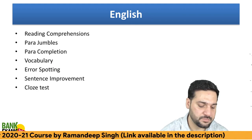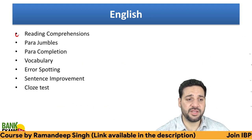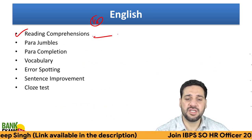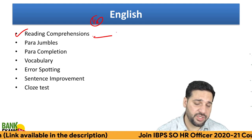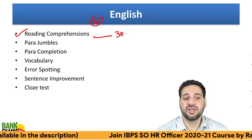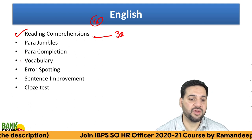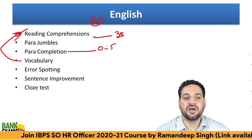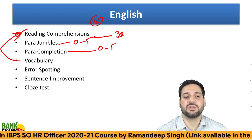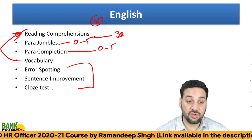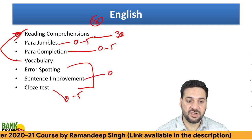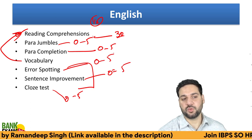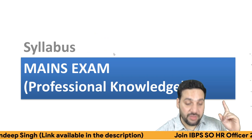For English Language, there are 50 questions at half a mark each. About 3–4 Reading Comprehensions covering around 30 marks directly, plus Vocabulary. Para Completions, Para Jumbles (sometimes), Error Spotting, Cloze Test (0–5 questions), and Sentence Improvement are the other topics covered.